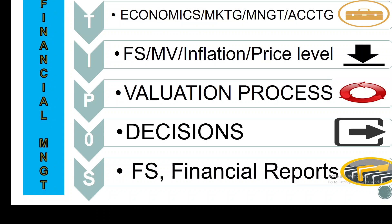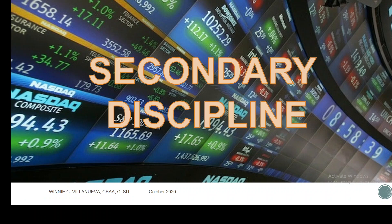In financial management, your tools are all the disciplines — primary and secondary. Your input will be your financial statements, market value, inflation, and price level. This facilitates the valuation process. The decisions to be made are financing, investing, and operating. Likewise, we need to keep our financial statements and financial reports as storage or documentation. That covers the primary discipline. We will be discussing the secondary discipline later.